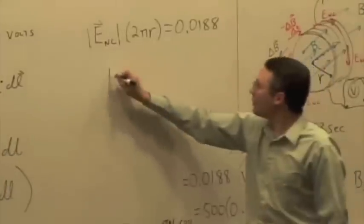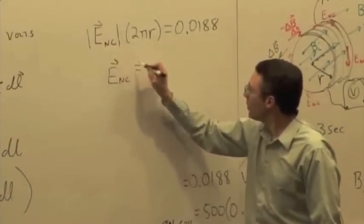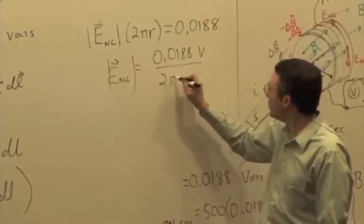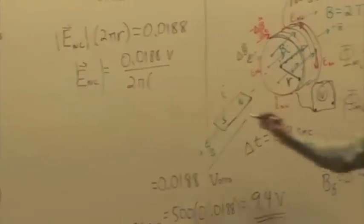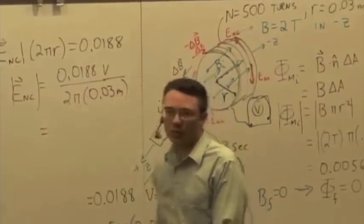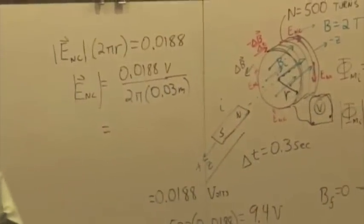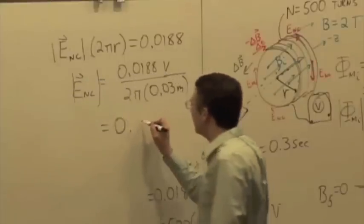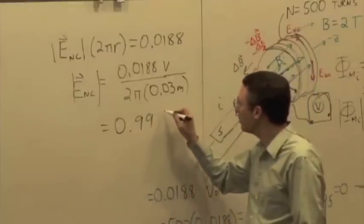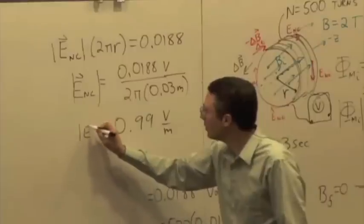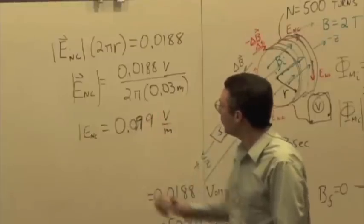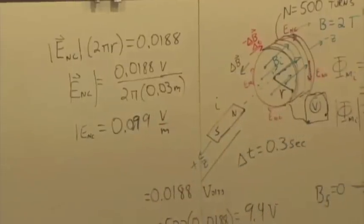You can solve for the electric field. The magnitude of it is going to be 0.0188 volts divided by 2 times π times, we said the radius was 3 centimeters, 0.03 meters. So what's the electric field? What's the electric field in the coil? 0.099? So about 1 volt per meter? 0.099 volts per meter.